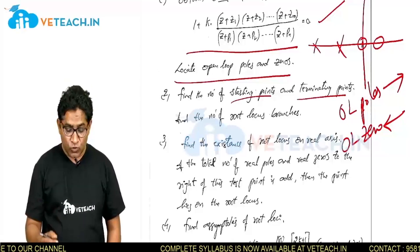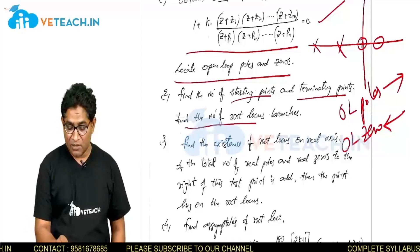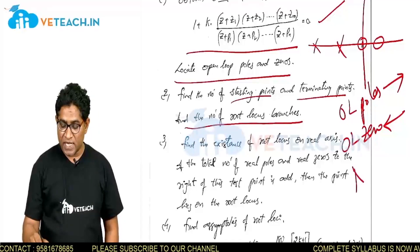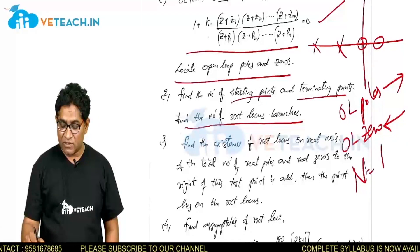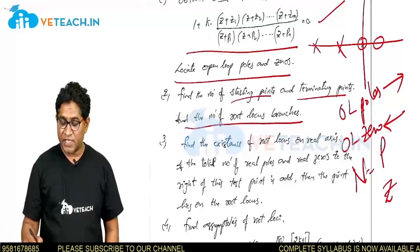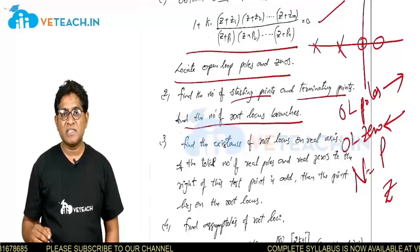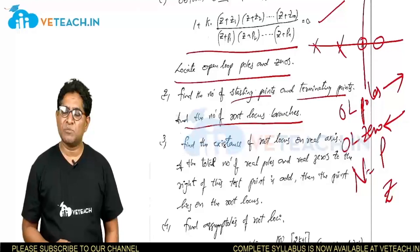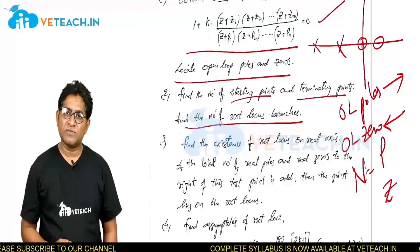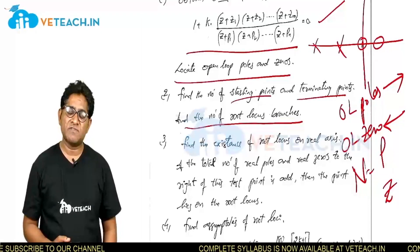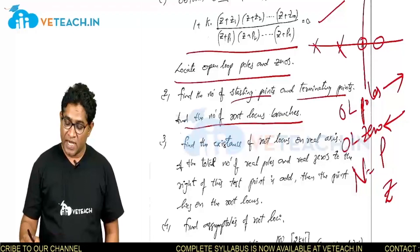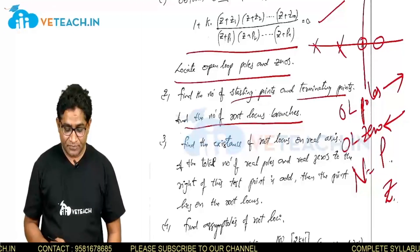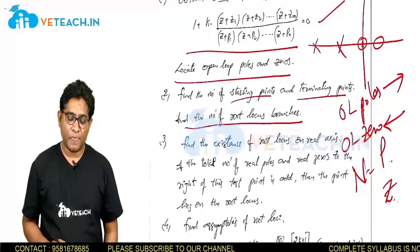The number of root locus branches N equals either P or Z, whichever is greater. If the number of poles is greater than the number of zeros, then the number of root locus branches equals the number of poles. That is step 2.